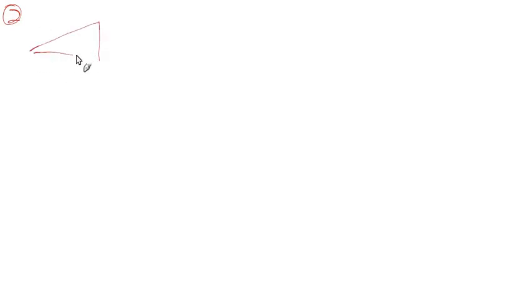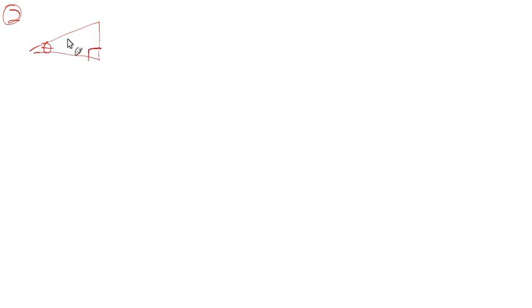We're going to start with number 2 and 4.3. We have a right triangle. Here's the angle, so this would be the opposite side — opposite the angle. This is adjacent, and this would be the hypotenuse up here.